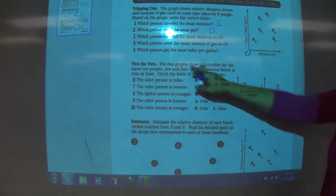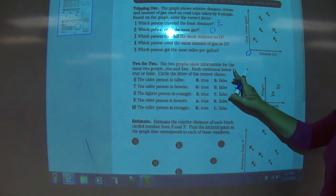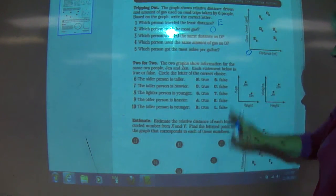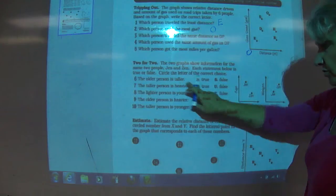The important thing is to read the question carefully. The two graphs show information for the same two people, Jin and Zen. Each statement below, look at the true and the false.